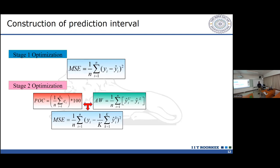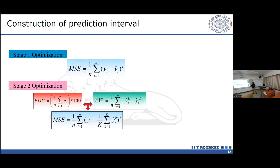For quantifying parameter uncertainty, we did a two-stage optimization. Generally these models are optimized with only the first stage using mean square error or Nash-Sutcliffe efficiency to minimize error between model prediction and observation. In the second stage, we wanted to maximize how well we could minimize uncertainty. We used percentage of coverage (POC), average width, and mean square error of the ensemble mean as objective functions. We created thousands of different random sets by perturbing the weights, giving different sets of simulation.